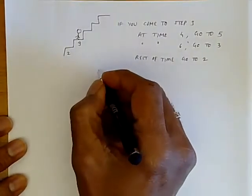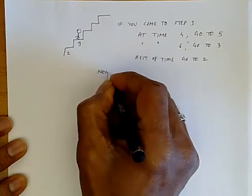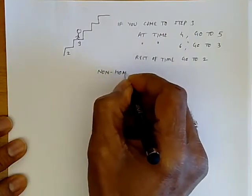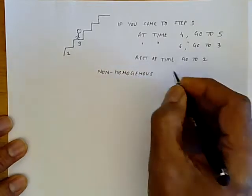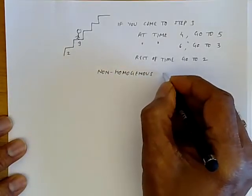When you have such a system like this, we call it a non-homogeneous, non-homogeneous stochastic process.